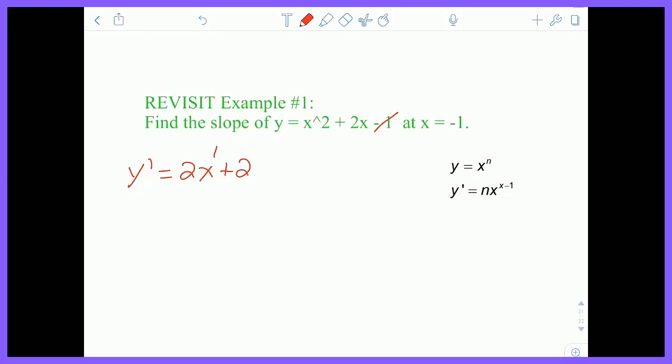And then the minus 1's derivative is—derivative of any constant is 0. So the derivative is 2x plus 2.